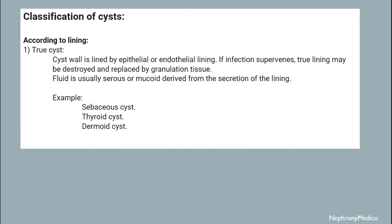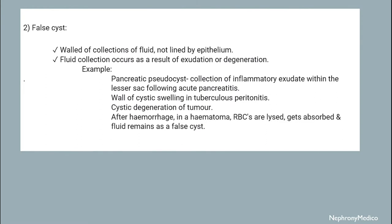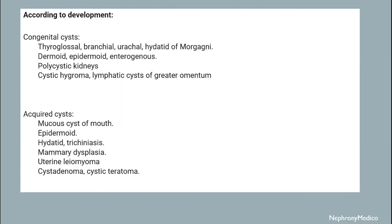According to lining, a cyst may be a true cyst, where the cyst wall is lined by epithelium or endothelial lining — examples include serous cyst, thyroid cyst, and dermal cyst. The other type is a false cyst, where there is a wall of fluid collection not lined by epithelium; the fluid collection occurs as a result of exudation or degeneration. Examples include pancreatic pseudocyst, cystic swelling of tubercular peritonitis, and cystic degeneration of tumors.